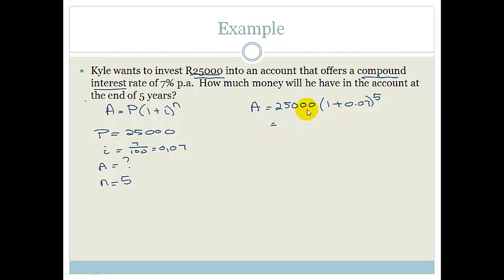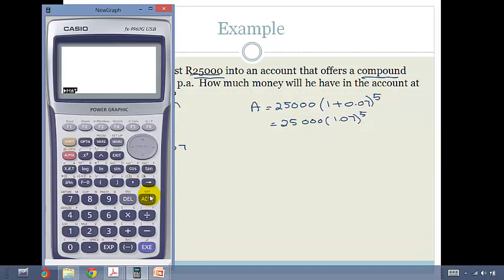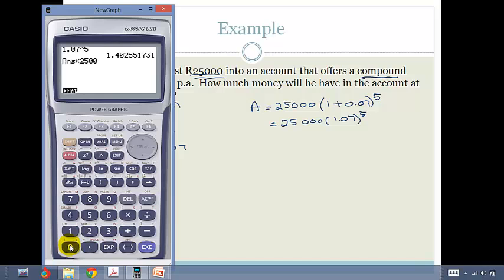To make it easier to put in our calculator, we can rearrange this to be 25,000 times 1.07 to the power of 5. We find our calculator, clear it, and go 1.07 to the power of 5 equals, then times 25,000.